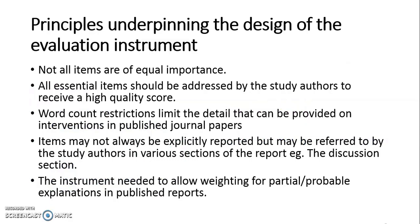Not all items are of equal importance. Consequently, we had certain principles which underpinned the design of the evaluation instrument. Items such as interventionist standardisation were considered to be more essential to intervention quality than items such as the researchers or authors stating that the intervention was delivered in accordance with the trial protocol. We felt that all essential aspects of intervention quality should be addressed by the study authors to receive a high quality score. There was an acknowledgement that journal word count restrictions limit the detail that authors can provide on the intervention and its delivery in a published paper. We also acknowledged that items may not always be explicitly reported, but may be referred to by study authors in various sections of the report, e.g. the discussion section. Consequently, it was considered important that the instrument enabled the review team to allocate a weighting for partial or probable explanations in published reports.